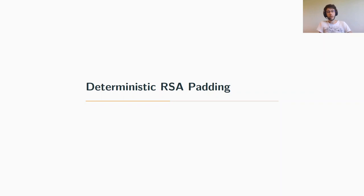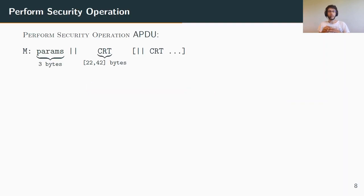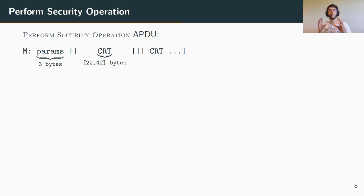After this introduction, let's start with the first issue we noticed. SCP-10's specification specifically mandates using a deterministic padding for RSA encryption in key transport. The perform security operation APDU is very sensitive since it transports the raw session keys. The message to be encrypted contains three bytes of parameters followed by one or more CRT (Control Reference Templates), which are data structures containing a key along with parameters describing its usage, with an IV appended if the key is for integrity purposes.